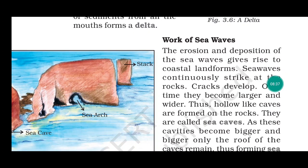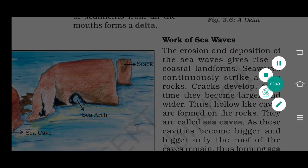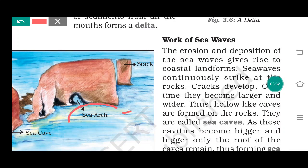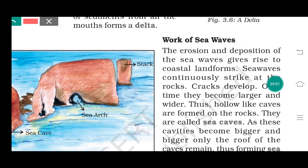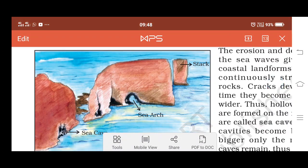Work of sea waves: the erosion and deposition of sea waves gives rise to coastal landforms. We can see here sea arc, stack, and sea cave. A sea cave looks like a cave, a sea arc looks like an arc, and a stack is a single wall — that's why it is called a stack.